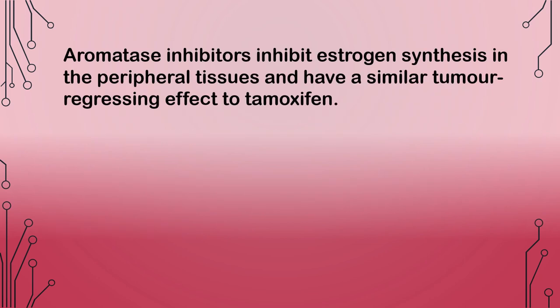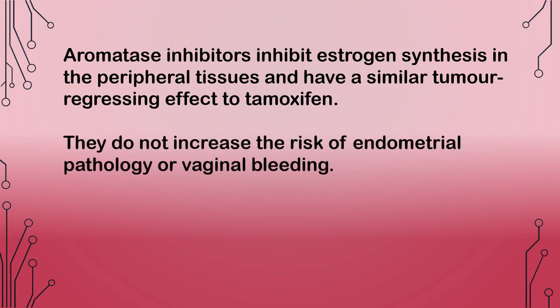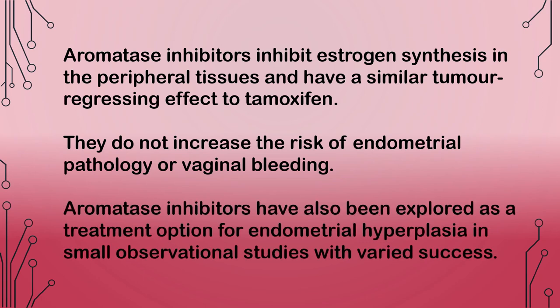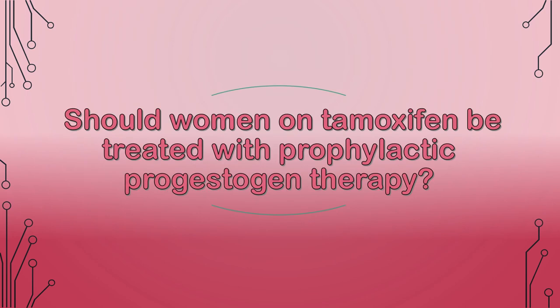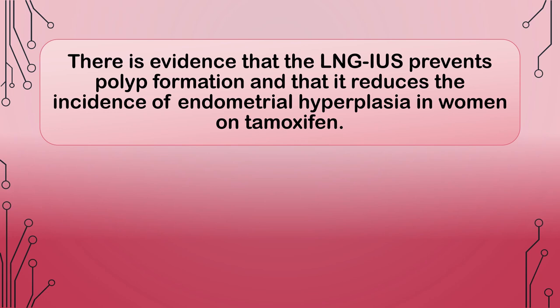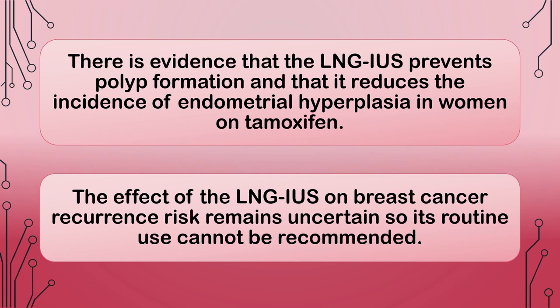Aromatase inhibitors inhibit estrogen synthesis in the peripheral tissues and have a similar tumor-regressing effect to tamoxifen. They do not increase the risk of endometrial pathology or vaginal bleeding, and have also been explored as a treatment option for endometrial hyperplasia in small observational studies with varied success. Should women on tamoxifen be treated with prophylactic progestogen therapy? There is evidence that the LNG-IUS prevents polyp formation and reduces the incidence of endometrial hyperplasia in women on tamoxifen. However, the effect of the LNG-IUS on breast cancer recurrence risk remains uncertain so its routine use cannot be recommended.